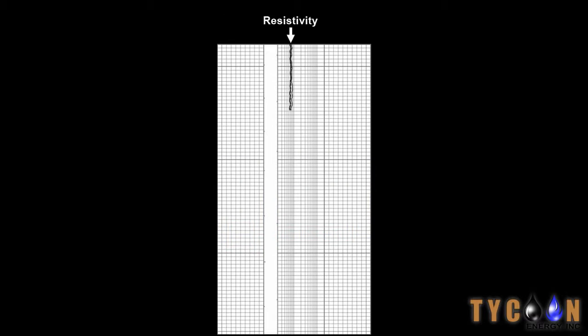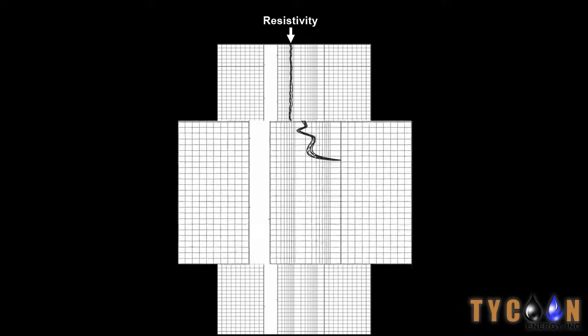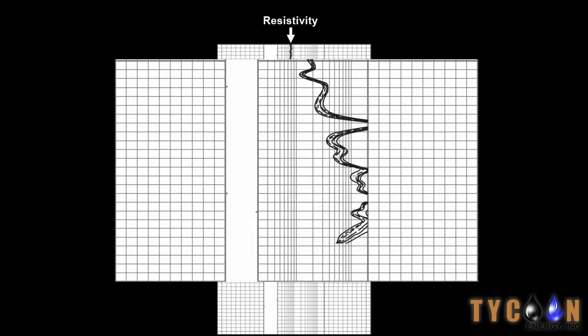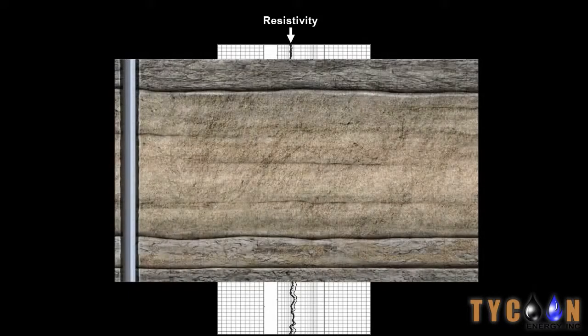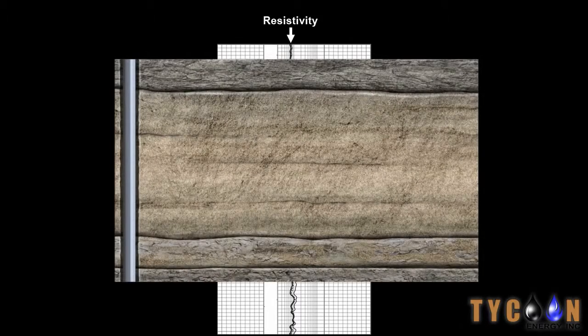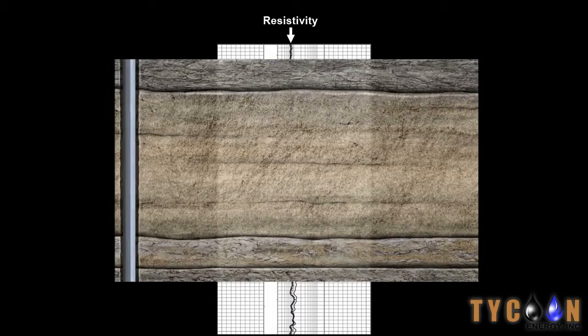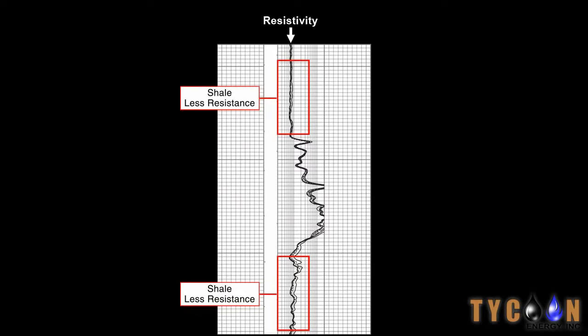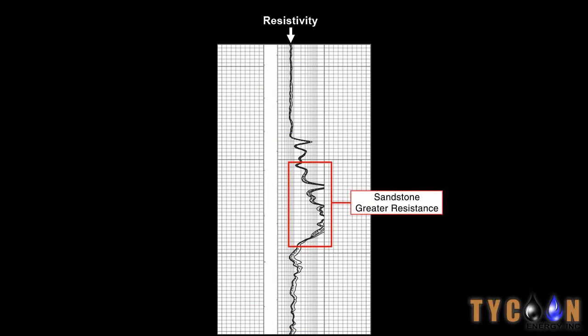The center section of the log shows readings from the resistivity tool. The overlapping lines are six resistivity curves, each one measuring at a different distance from the wellbore, how well the rock conducts electricity. The left side of the grid shows less resistance to electricity, while the right side denotes greater resistance.